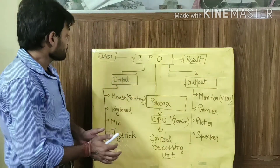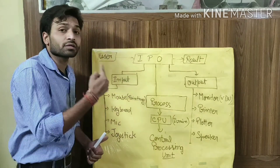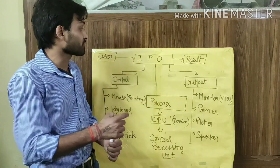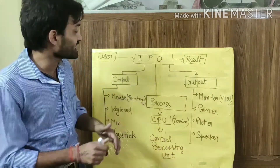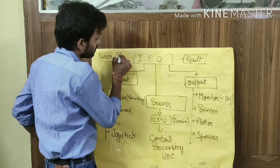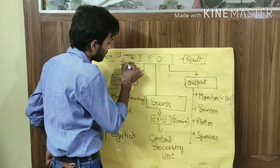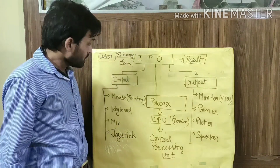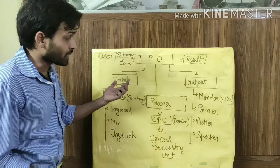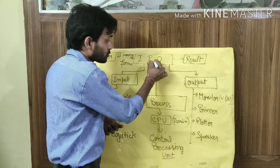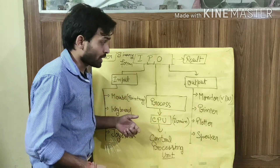Now, the input the user provides is first converted into a computer-readable form — that means in binary form. So first there is an input layer, then the input is converted into binary form, then processed according to the set of instructions, and then the result is produced.